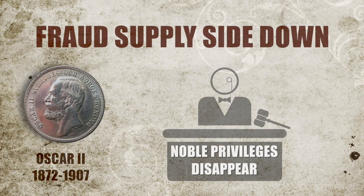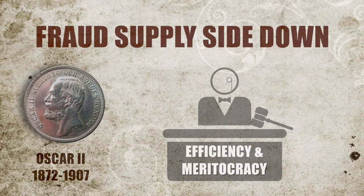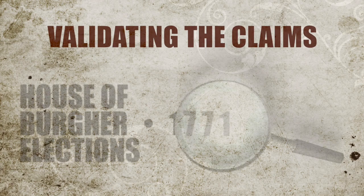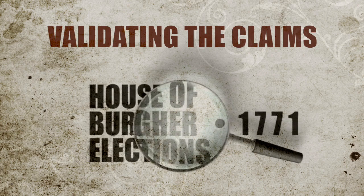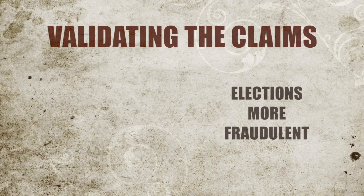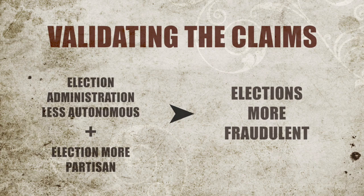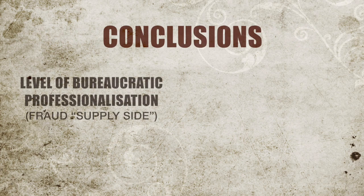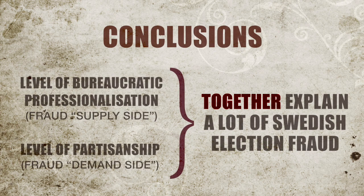Noble privileges had disappeared, a uniform salary system had been introduced, and government agencies had been reorganized with efficiency and meritocracy as major drivers. To test these claims further, Theorell examined some 43 House of Burger elections that took place in the early spring of 1771. It turned out that elections were indeed more fraudulent where the election administration was less autonomous and where elections were more partisan. A professionalized bureaucracy combined with a strong element of partisanship appears to explain a great deal of the election fraud that took place in Sweden.